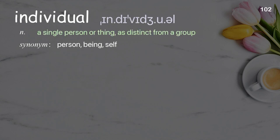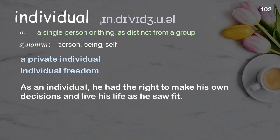Individual: a single person or thing as distinct from a group. Examples: a private individual, individual freedom. As an individual he had the right to make his own decisions and live his life as he saw fit.